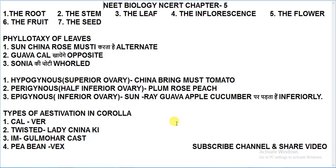Phyllotaxy is the pattern of arrangement of leaves on the stem or branch. There are three types: alternate, opposite, and whorled. This is a useful mnemonic to remember them.